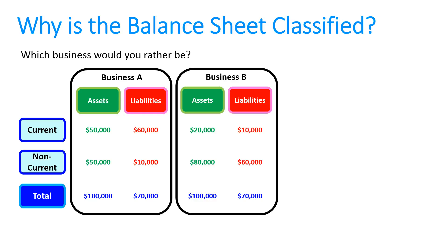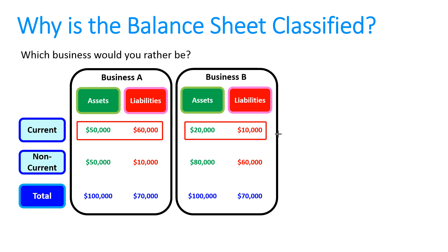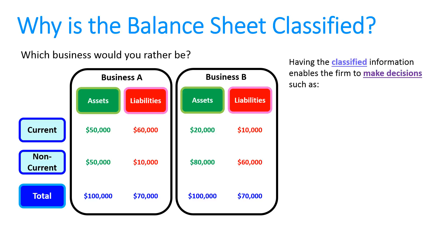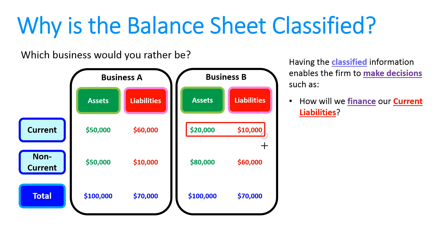However, what if we also had classified liabilities? For Business A, current liabilities are $60,000 and non-current $10,000, but for Business B it's the opposite. Looking at that, I'd actually prefer to be Business B — because whilst it has fewer current assets, those current assets are double its current liabilities. Business A has $50,000 of current assets but $60,000 of current liabilities due. This all comes down to relevance — we classify a balance sheet to make it relevant so we can use it to make decisions.